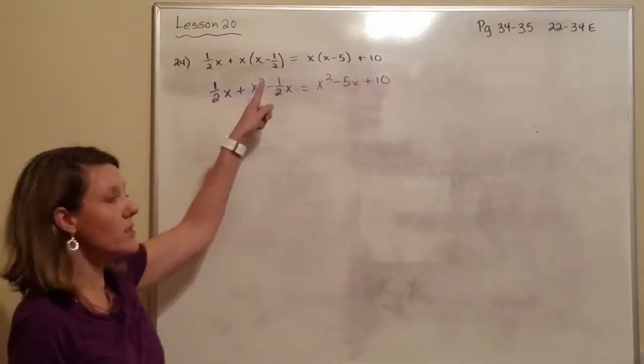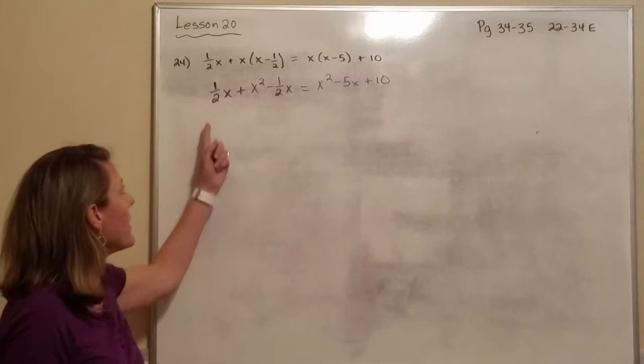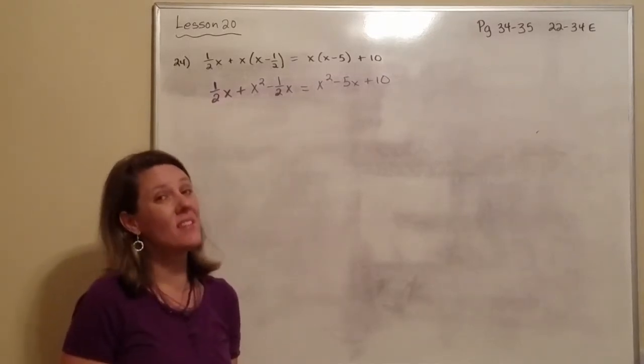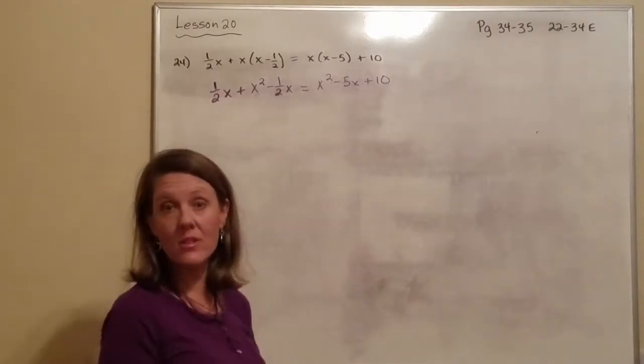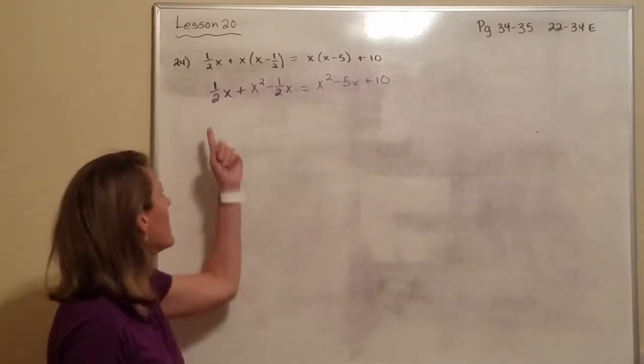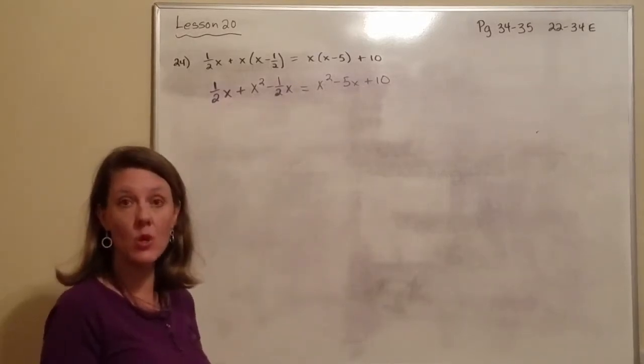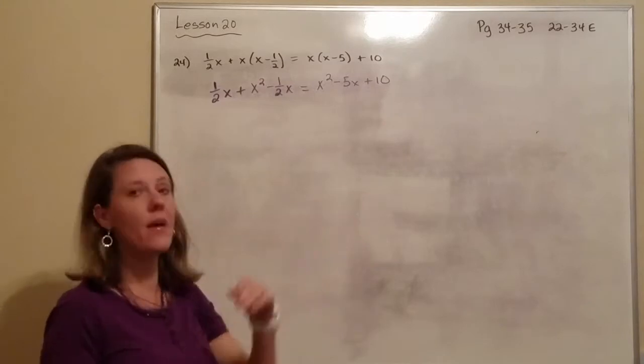Okay, so I distributed. Now, because I have fractions and most people don't like fractions, let's get rid of the fractions. The denominator of both of them is 2, so let's multiply everything by 2.